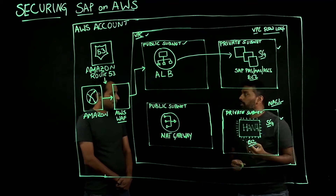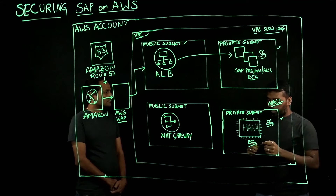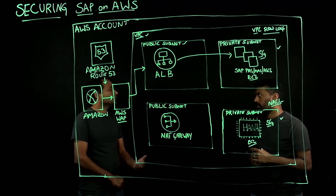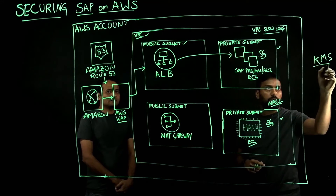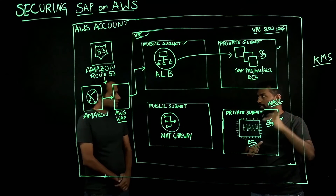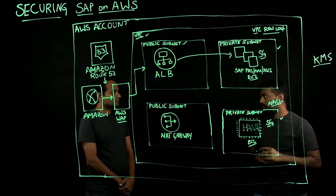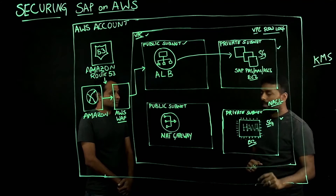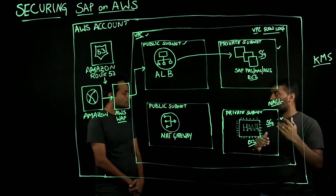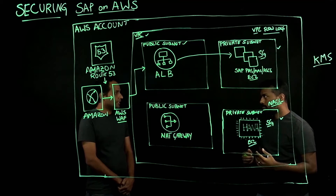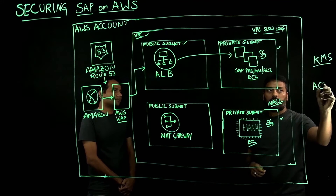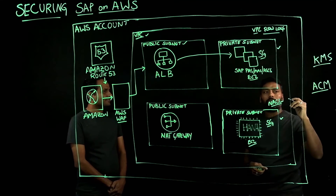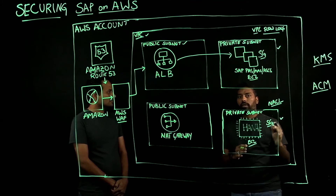The other aspect is data protection within infrastructure protection. Data protection can be achieved in two ways. One is protecting data at rest — you can encrypt data at rest using AWS KMS, the key management service. Any EBS volumes encrypted by KMS keys ensure the data transferred between your EC2 instances and EBS volumes is fully encrypted. Then you have data protection in transit, for which you can use certificate-based encryption. AWS Certificate Manager is the service that lets you encrypt your data in transit.